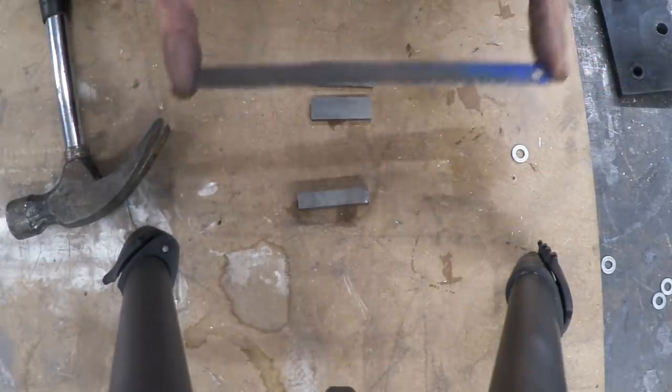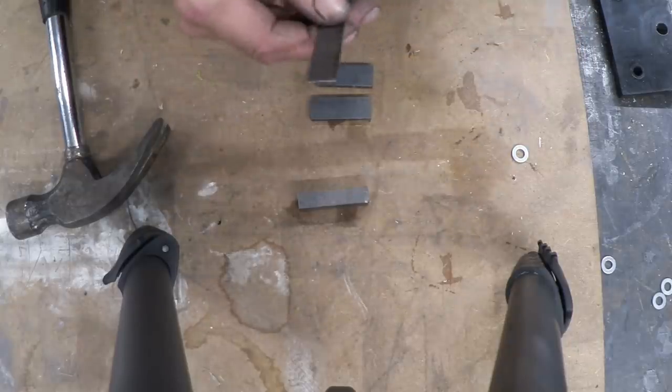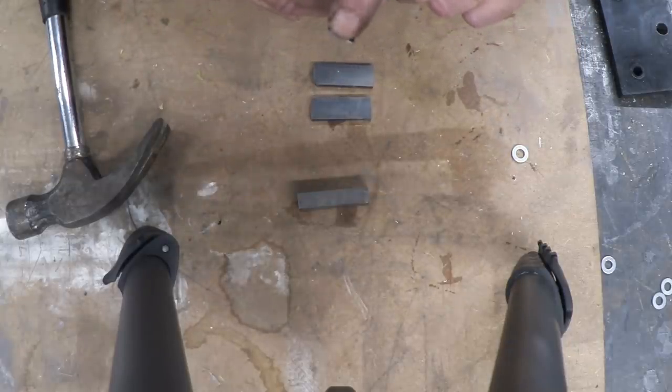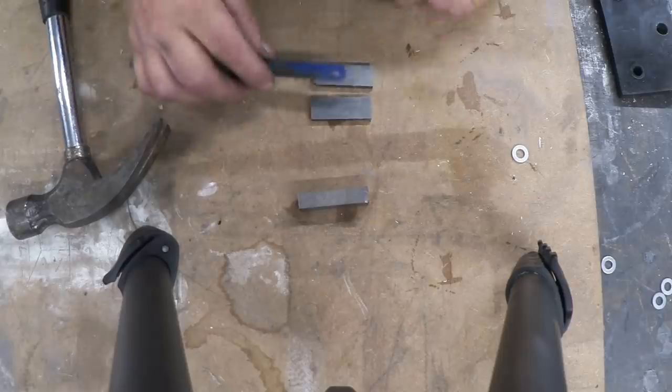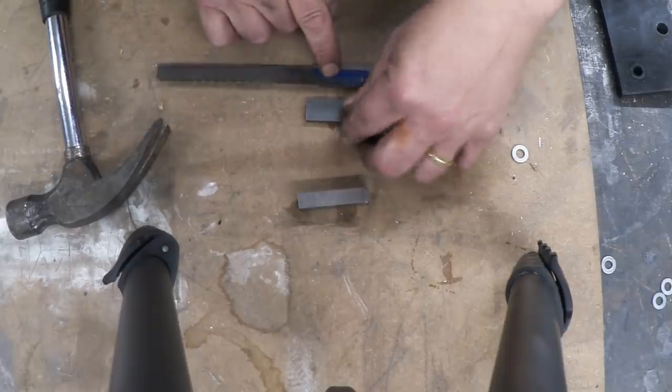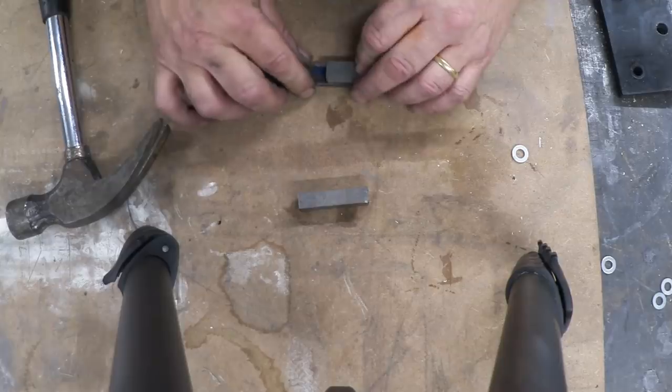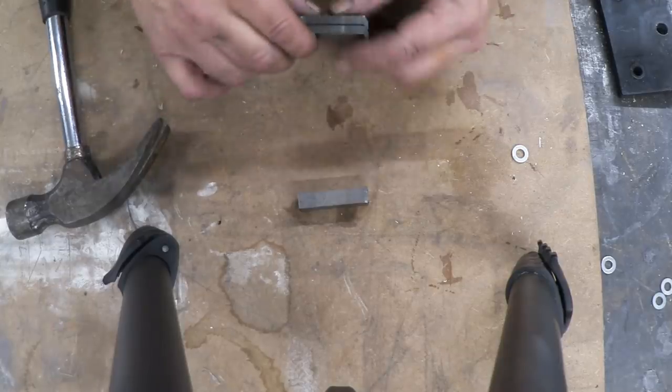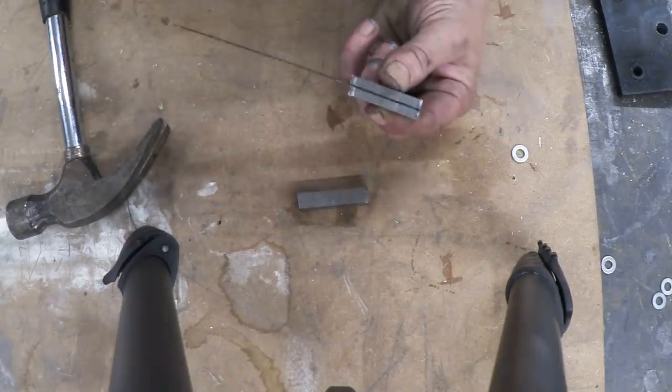Now what we want is half a hacksaw blade. Hacksaw blades are tremendously easy to cut. Stick it in a vise, hit it with a hammer, it's so brittle it'll just snap cleanly in half and we need to put the hacksaw blade in between the section that we've just split and rejoin it together so that we end up with a piece like that.